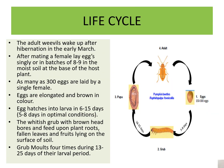Life cycle: it includes the egg, the larva (known as a grub), pupa, and adult. The adult emerges after hibernation in early March. After mating, a female lays eggs singly or in batches of 8 to 9 in moist soil at the base of the host plant. As many as 300 eggs are laid by a single female. The eggs are elongated and brown in color.